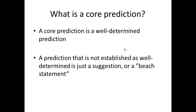A core prediction is simply a prediction that is well-determined — one that really has to be fulfilled if the model is to describe all the other data we have. This contrasts with a prediction that has not been established as well-determined. If it's not established as well-determined, we just call it a suggestion or a beach statement.